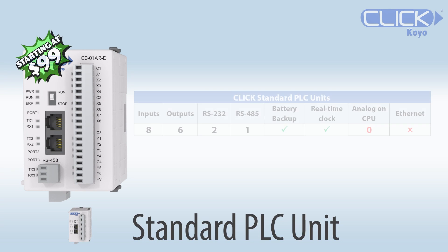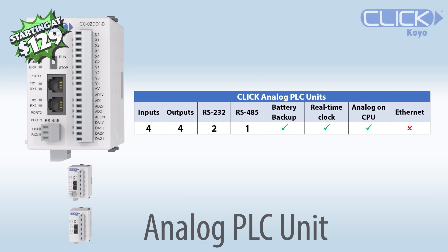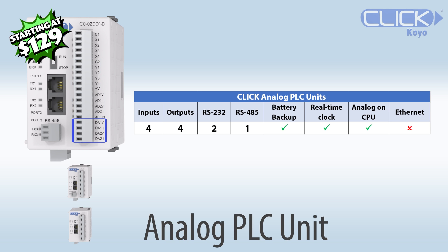Next is the Standard Models, which adds battery backup that also provides a real-time clock for programming. This unit also adds an additional RS-485 port, giving you a total of 3 independent serial ports. Next, there are the Analog PLCs that have 4 discrete inputs, 4 discrete outputs, 2 analog inputs, and 2 analog outputs. These units also have a battery backup and real-time clock with the 3 serial ports.